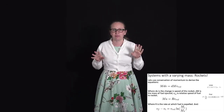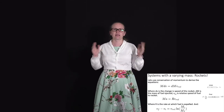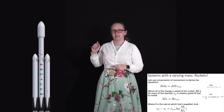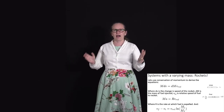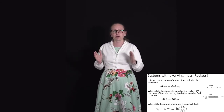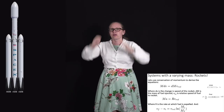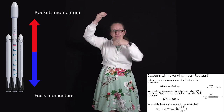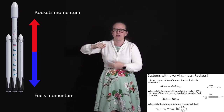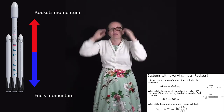So far we've considered systems where mass doesn't change, but this isn't always the case. A rocket is a good example — much of its mass is fuel. When it takes off, the gravitational force is small compared to the internal forces from expelling fuel. As the rocket expels fuel downward, the fuel gains downward momentum and the rocket gains upward momentum, keeping the total momentum of the rocket-fuel system constant.